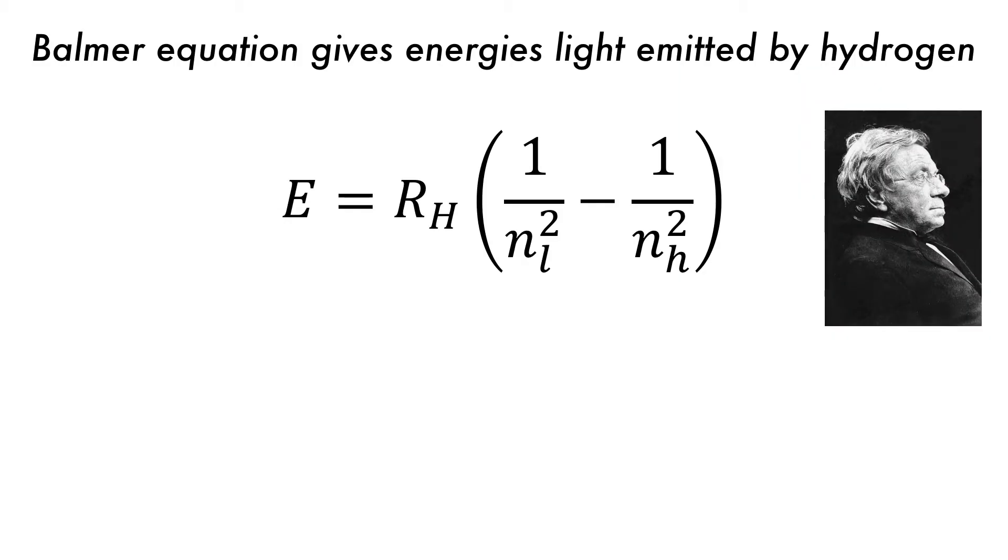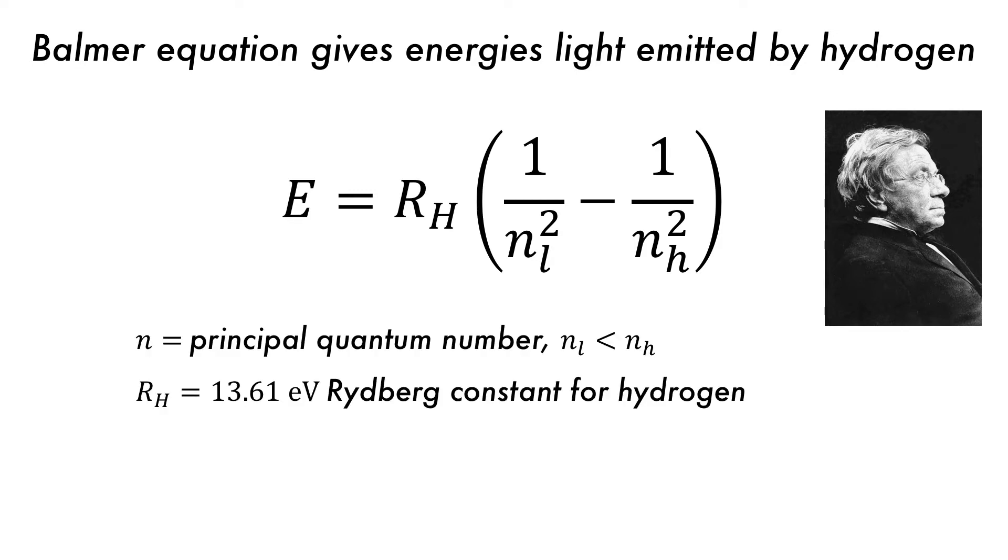These lines were so regular that Balmer was able to create an equation to describe their energy. N is the principal quantum number, and Rh is the Rydberg constant for hydrogen. These quantum numbers are a big topic that we'll discuss in a future video, and I'll make sure to put the link in the description below.